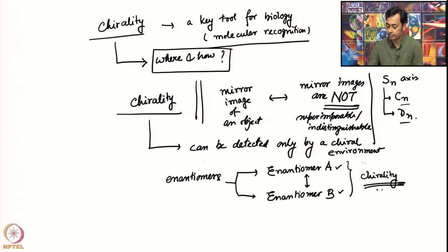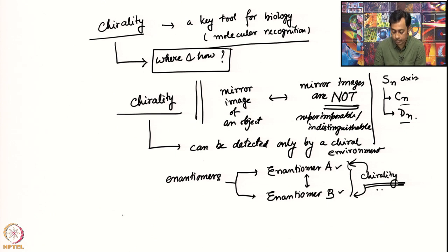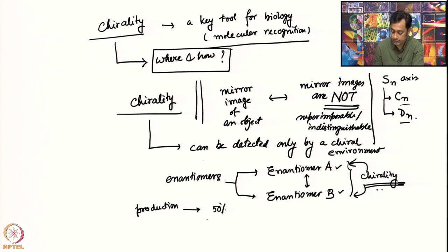Only chirality can distinguish between enantiomer A and enantiomer B. That is why, even when you are actually producing a chemical — during the production which typically does not use any chiral environment — what you get is 50% enantiomer A and 50% enantiomer B.